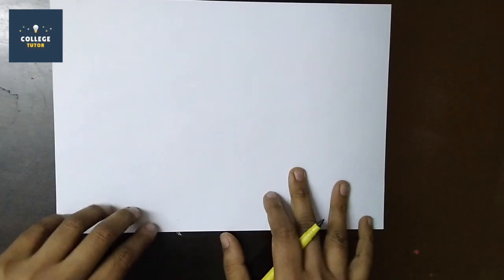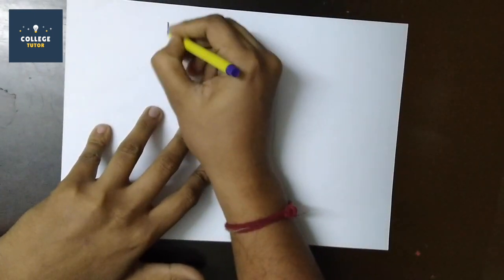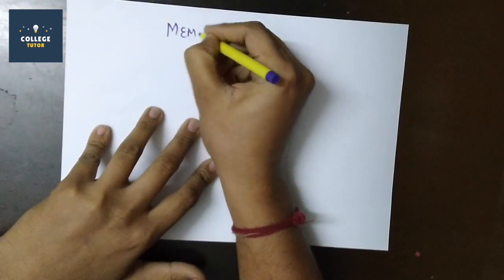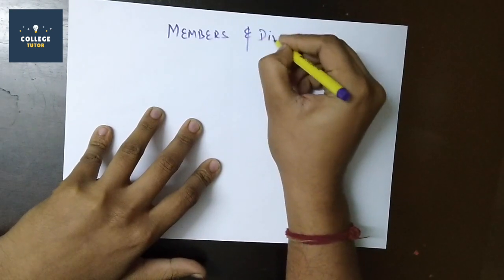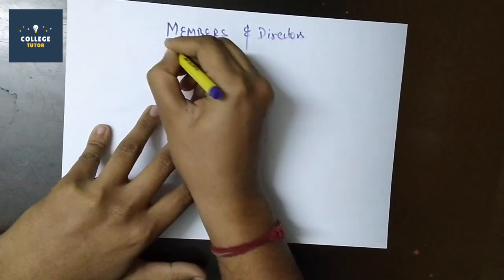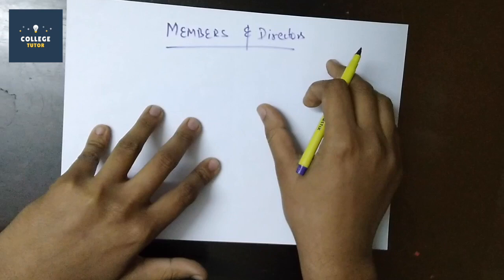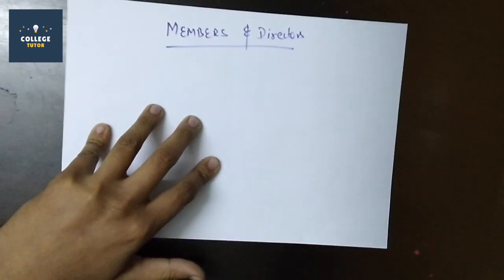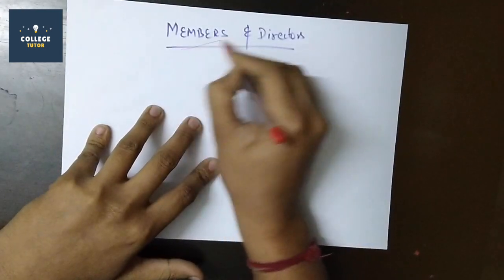Hello guys, so today we will discuss unit 3 second topic which is about members and directors of the company. I have divided this in two parts, I will talk about members after that we will go to directors.